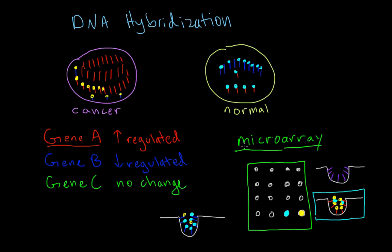This is the idea of a microarray chip: it assays the gene expression profile of a cancer cell versus a normal cell. It tells you whether a specific gene is upregulated or downregulated. If there's no change, instead of seeing a yellow or blue dot you'd see something in the middle — like a green dot. It's a quick way to look at a whole bunch of different genes on a single chip and determine which ones are upregulated or downregulated.